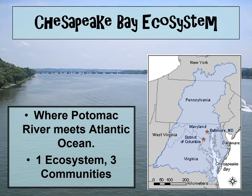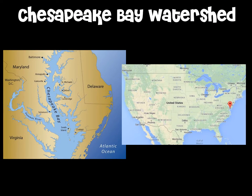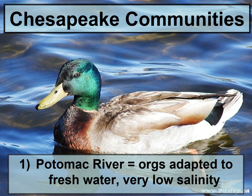Now let's take a look at an ecosystem that has three communities interacting with each other — the Chesapeake Bay ecosystem, where the Potomac River meets the Atlantic Ocean. On the map you can see it's on the east coast of the United States, between states such as Delaware, Maryland, and Virginia. The first community is the Potomac River, a freshwater river system with very low salinity, and the organisms there have adapted to those low salt conditions.